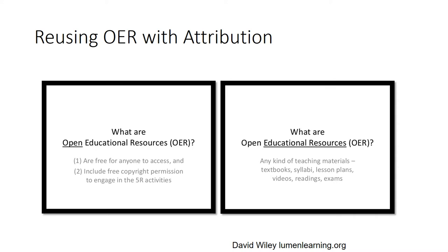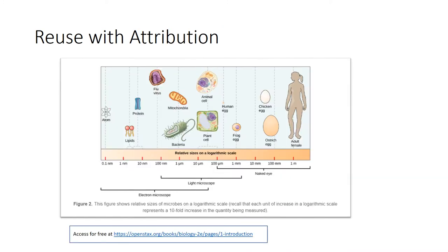Open Educational Resources are free to access online and available for anyone to incorporate into their own course materials. If I wanted to reuse this figure from an OpenStax textbook, I would simply add the attribution statement you see at the bottom — access for free at this OpenStax.org URL.